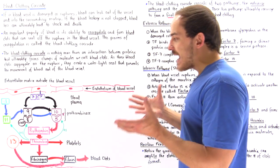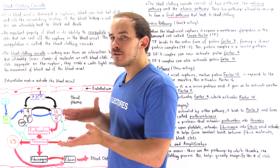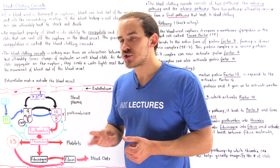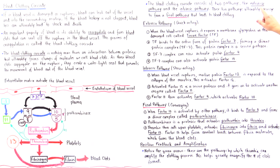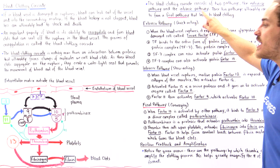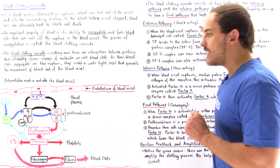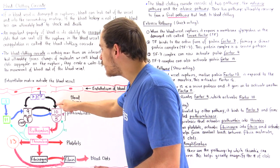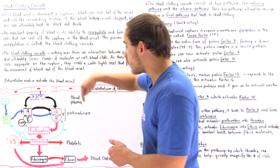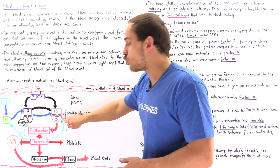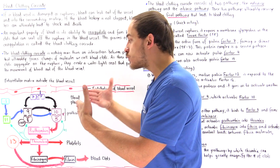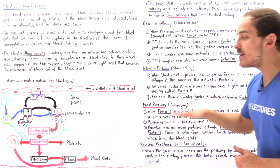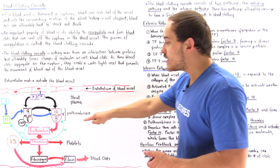To make things easier, we can divide the blood clotting cascade into three processes. The first two are the extrinsic pathway — shown with black arrows — and the intrinsic pathway — shown with blue arrows. These two pathways converge at a single point, marked with a star, and then proceed together into the final common pathway, shown with the red arrow.